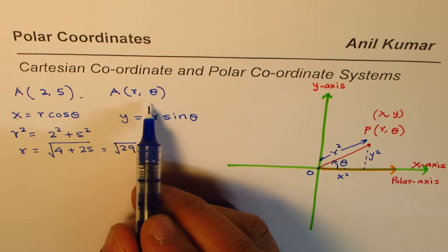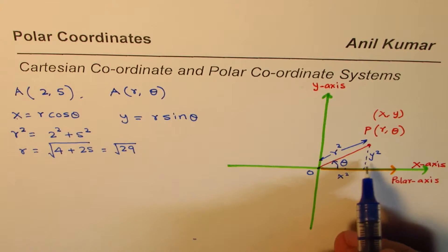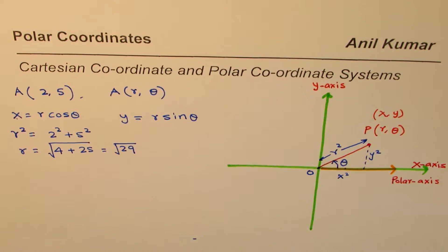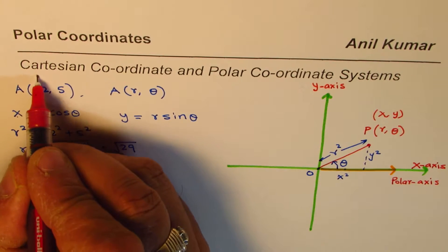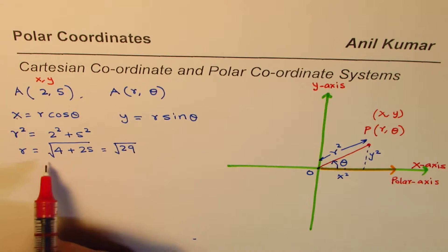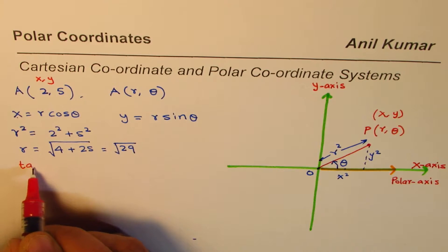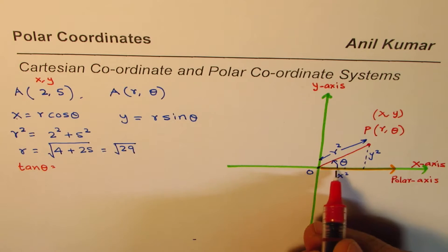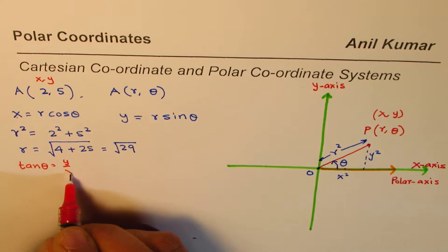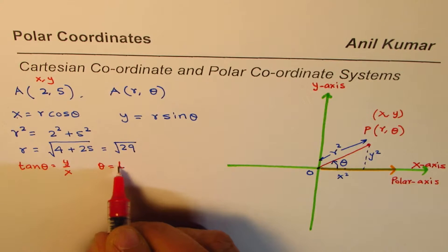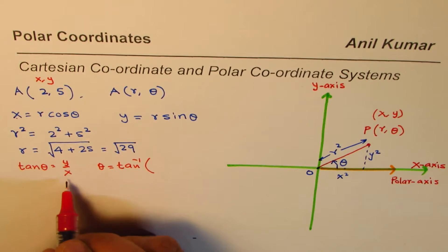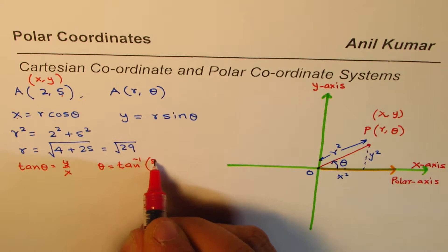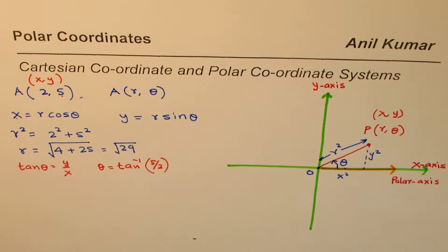Now to find theta, we use tangent. Tan(θ) equals the ratio of the opposite side to the adjacent side, so tan(θ) = y/x. Therefore, θ = tan⁻¹(y/x). In our case, y is 5 and x is 2, so θ = tan⁻¹(5/2).